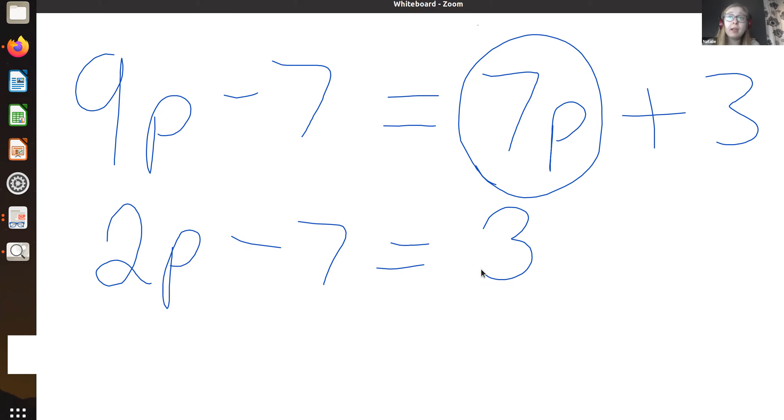Then that looks exactly the same as the equations we could solve before. So something take away seven equals three. Well, 10 take away seven equals three. So our two times something equals 10. What's our something? Can you work it out? Did you say that our something is equal to five? If you did, well done. Excellent stuff. Our p, our unknown number of potatoes, were equal to five.